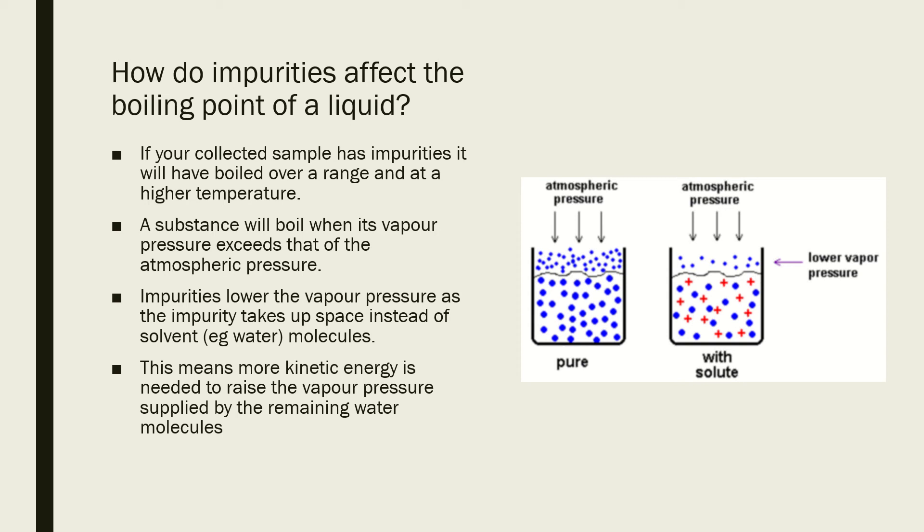Now the pure substance, you can Google the true boiling point for that, and if you've managed to get it exactly the same in class, then obviously you've made it very well. Typically, however, you will get a boiling point that is higher than the true substance value. So we're going to be going through the reason for this and how the impurities have actually affected it.